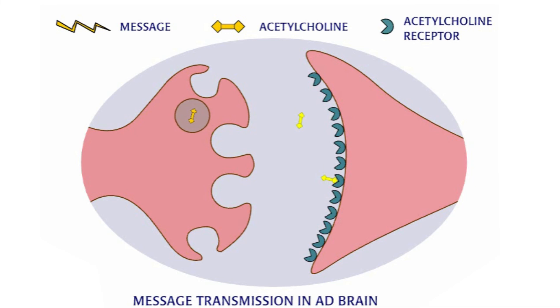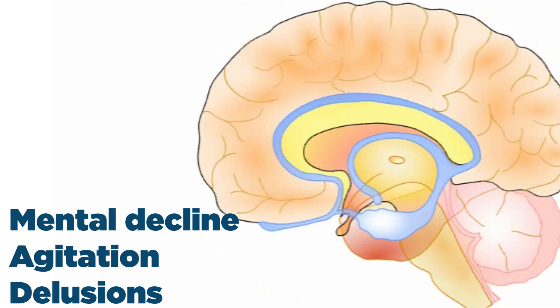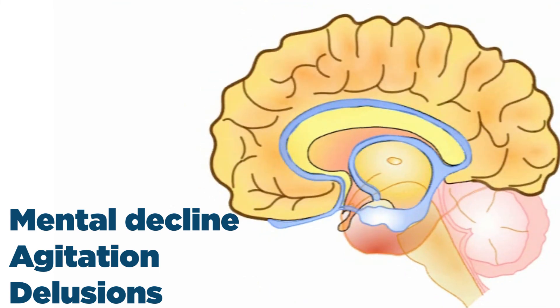The end result of the structural and chemical changes in the Alzheimer's disease brain is progressive cell death and an overall shrinkage of brain tissues. This culminates in the progressive clinical symptoms of Alzheimer's disease, such as mental decline, agitation, and delusions.